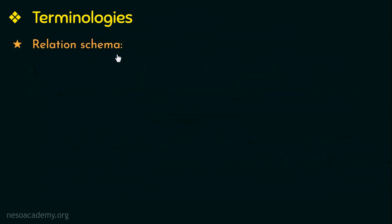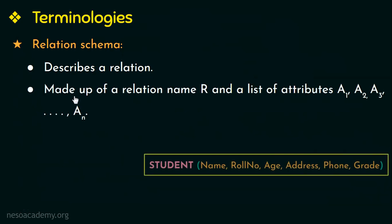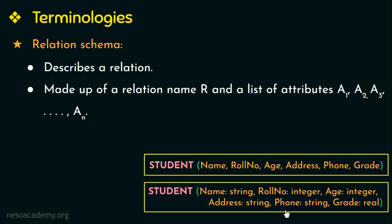Next, what is a relation schema? A relation schema is used to describe a relation or a table. A relation schema is made up of a relation name, denoted by capital R, and also a list of attributes denoted as a1, a2, a3, a4, a5, and a6. You can also write a relation schema by including the data types, where name has to be a string, role number has to be an integer, and so on.